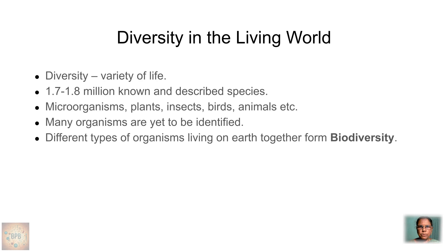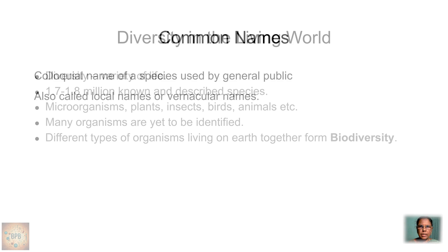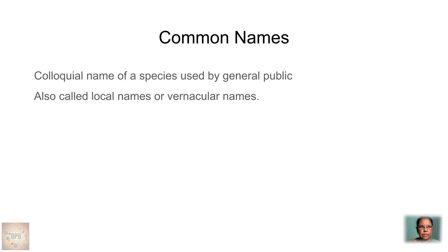All these different types of organisms which live on earth together form biodiversity. Each organism is given different names in different areas, so in a particular area a particular name is given to a particular species. These names given to species in a particular area are called local names, common names, or vernacular names.